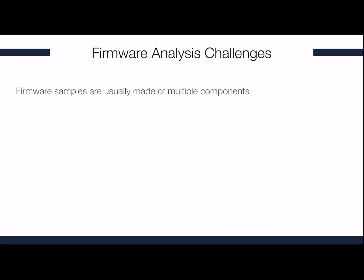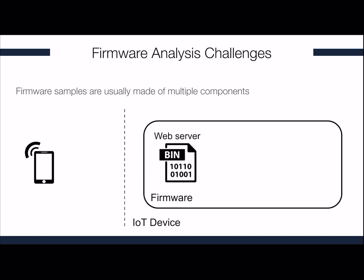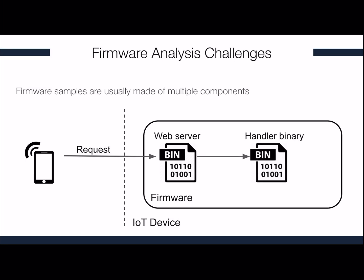Firmware are usually made of multiple components. When we communicate with our IoT device, we use our phone — we send a request which will be received by the first component in the firmware. This component, the web server in this example, will take the request, do some elaboration, and might share some data with another component, the handler binary in this example, which will take the data, elaborate it, and send back the answer to the web server, which finally sends back the response to our smartphone.